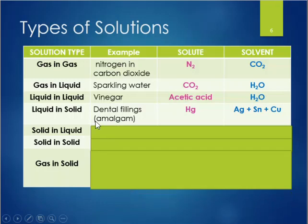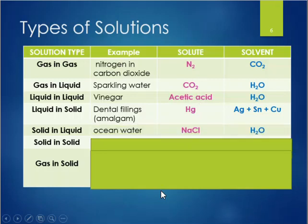Dental fillings are an example of a liquid-solid solution: mercury is the liquid solute added to an alloy of silver, tin, and copper. Salt water is a solid-liquid example — sodium chloride dissolved in water. With mixtures, the ratios don't matter: you can have one teaspoon or a whole cup of salt in water and still call it salt water. The amounts don't matter as long as both solute and solvent are present. This distinguishes a mixture from a pure substance like water, which must always be H₂O.